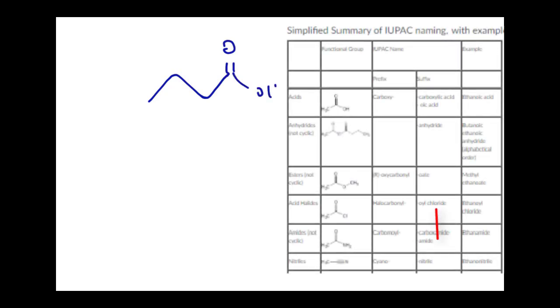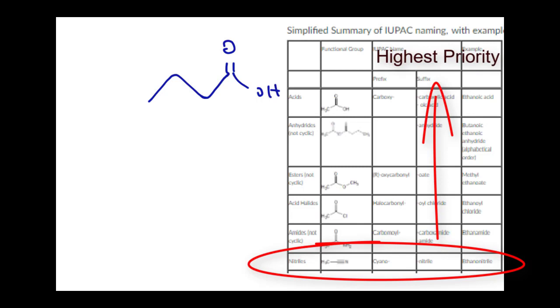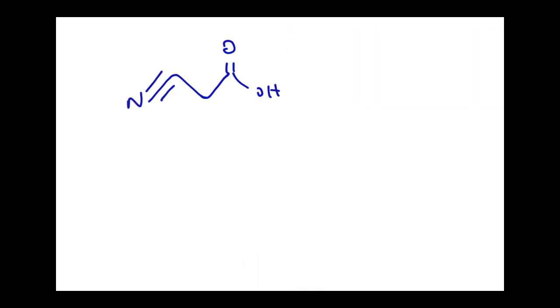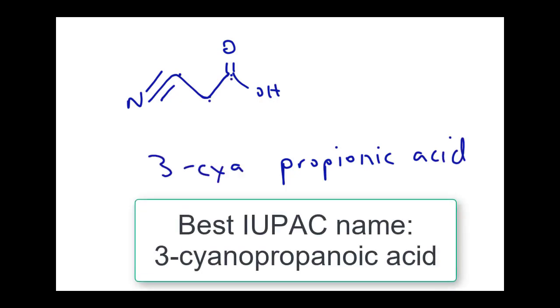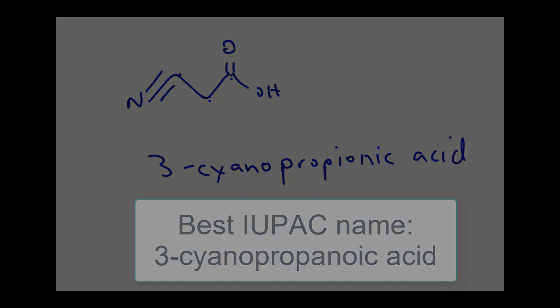And finally, if we have a compound where the cyano group is a lower priority, and really the only thing that's lower priority is the carboxylic acid, it gets the name cyano as well. So this compound, we have one, two, three carbons, so this is a propionic acid. And the three position is a cyano, so 3-cyano-propionic acid.